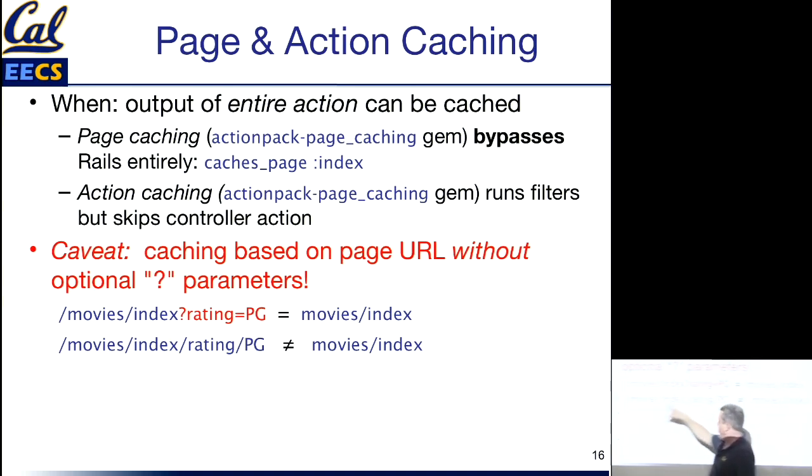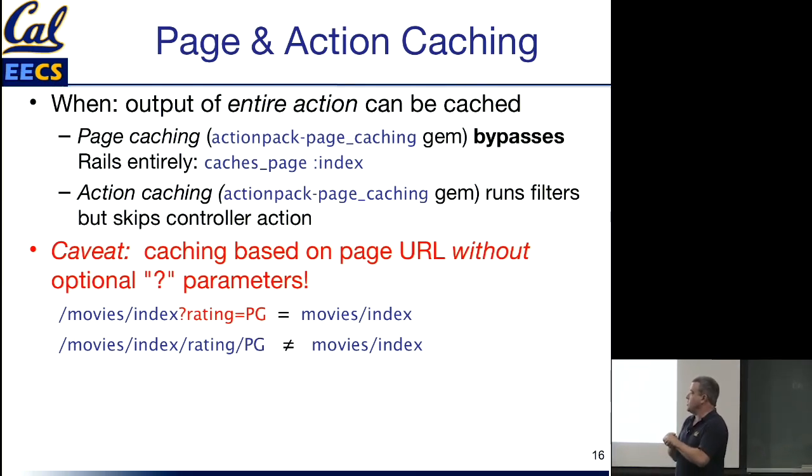There is a big caveat about this that has to do with the fact that when you do caching, the names of cached objects are based on the page URL without optional parameters. So for example, if the parameters make a difference in how the entire page is supposed to look, then you can't safely use this name to do page caching. You could do something like this, right? If you've got parameters that are actually encoded as part of the URI, and those parameters could affect how the page is displayed, this will work because now changing the value of rating will actually result in an entirely different URI.